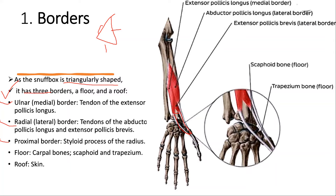The ulnar border is also called the medial border and is formed by the tendon of the extensor pollicis longus muscle. You can see the two tendons here. The radial border is formed between the tendons of the extensor pollicis brevis and the abductor pollicis longus, with the extensor pollicis brevis lying deeper than those two muscles.